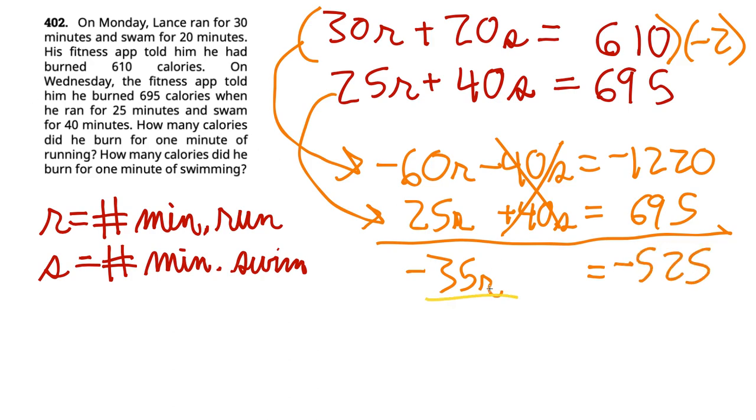So from here, we want to divide by that coefficient of R, which is negative 35. We divide 525 by negative 35. So we're left with R equals 15 calories. So R equals 15 calories running.